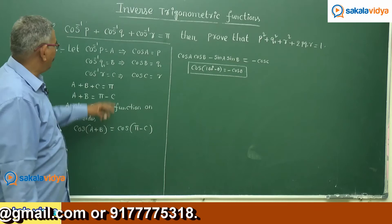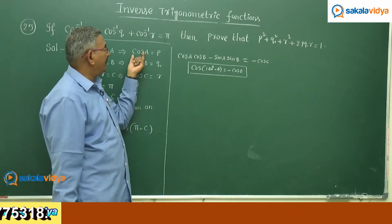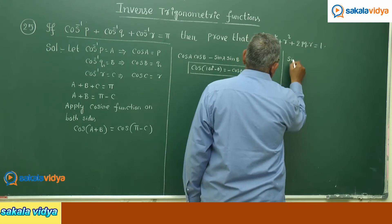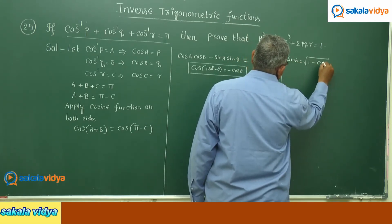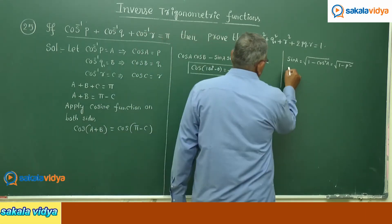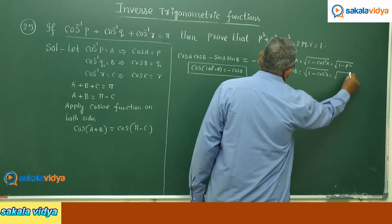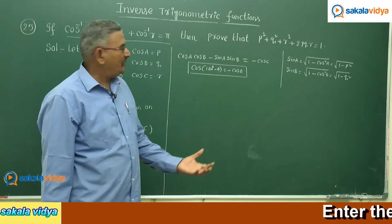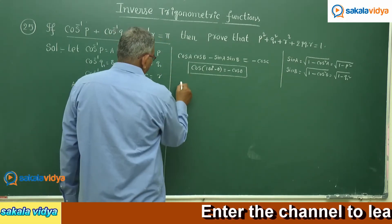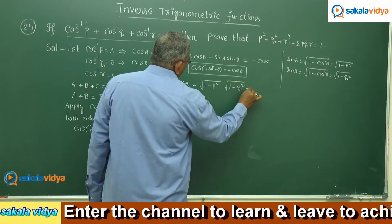Now let us replace the respective values. We know cos a = p, cos b = q, and cos c = r. For sin a and sin b, since sin a = √(1 − cos²a) = √(1 − p²), and similarly sin b = √(1 − q²). Substituting all values: pq − √(1−p²)·√(1−q²) = −r.